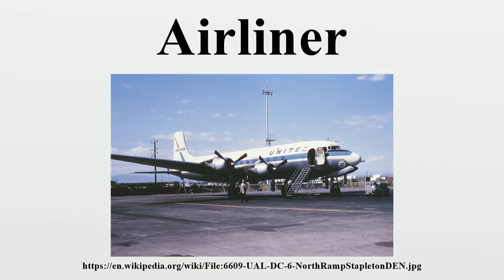The Ilya Muromets was a luxurious aircraft with a separate passenger saloon, wicker chairs, bedroom, lounge, and a toilet. The aircraft also had heating and electrical lighting. The Ilya Muromets first flew on December 10, 1913. On February 25, 1914, it took off for its first demonstration flight with 16 passengers aboard.